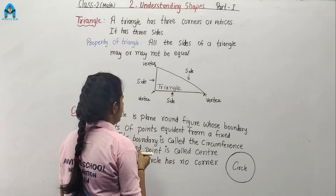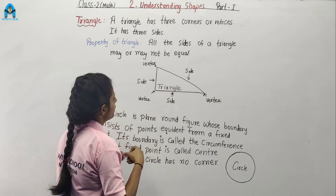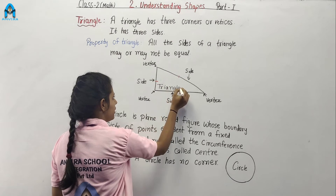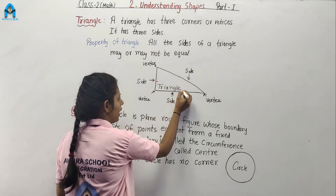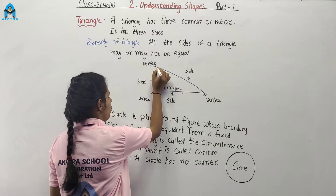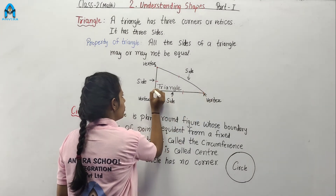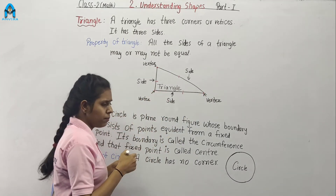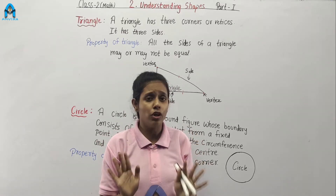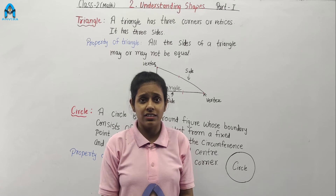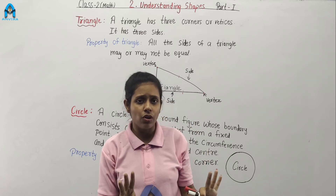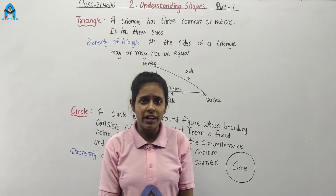Here, I draw a triangle. This has three sides — one, two and three sides — and also three corners — one, two, three. A shape with three sides and three corners is called triangle. It's not necessary that two sides are equal or not, but having three sides and three corners, the shape is called triangle.